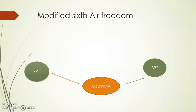The Modified Sixth Air Freedom is a variation where, instead of connecting two different countries, the carrier connects two places within the same country. For example, a carrier belonging to France could come to India and then connect to another part of India, such as Chennai. So a carrier of country A can connect two different places within another country by passing through its home country.